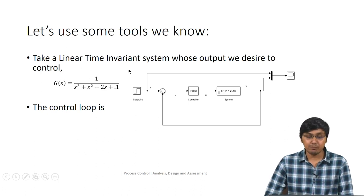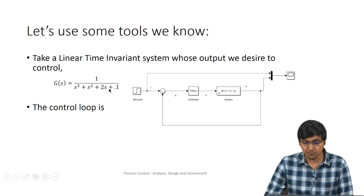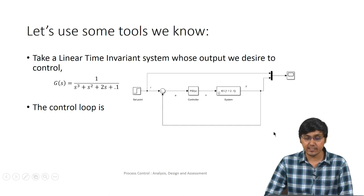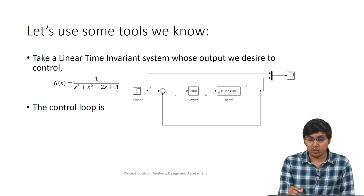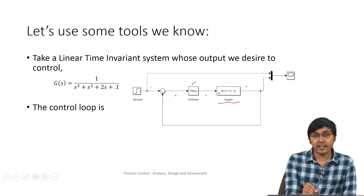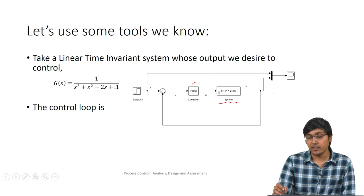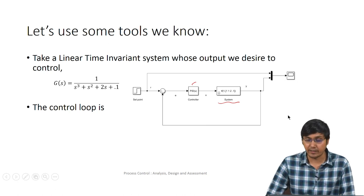We again take a linear time-invariant system of the form G(s) = 1/(s³ + s² + 2s + 0.1). This is for illustration purposes. In MATLAB Simulink, we have a control loop with a set point, and we apply a step change to see the servo response — how the controlled variable follows the set point change.